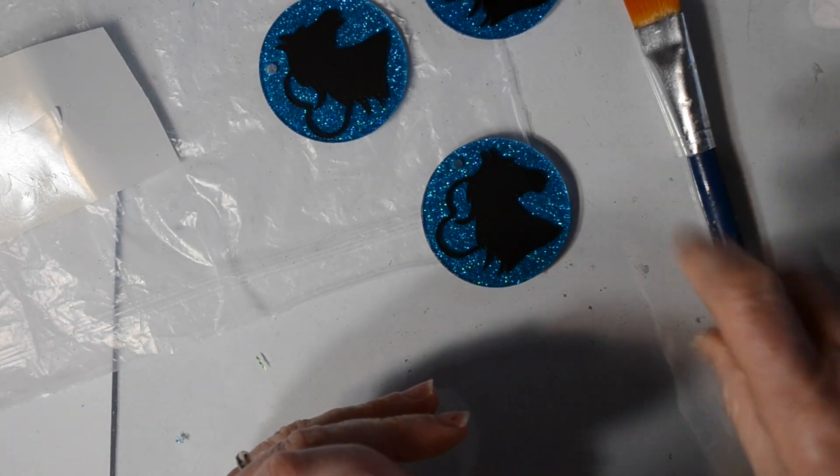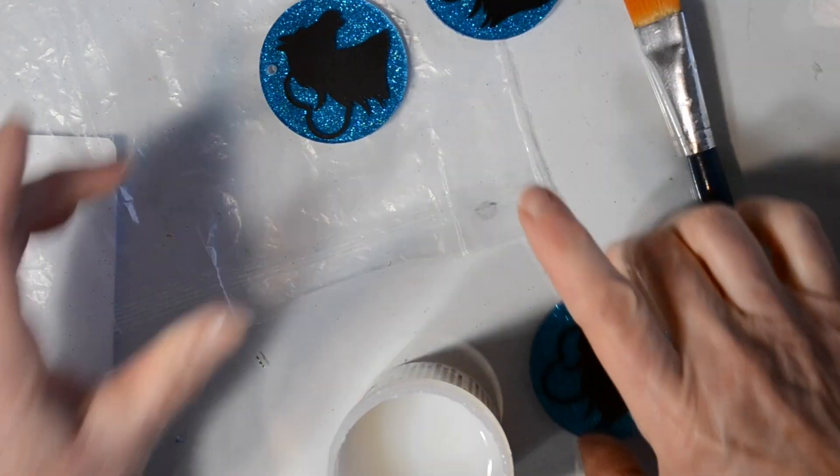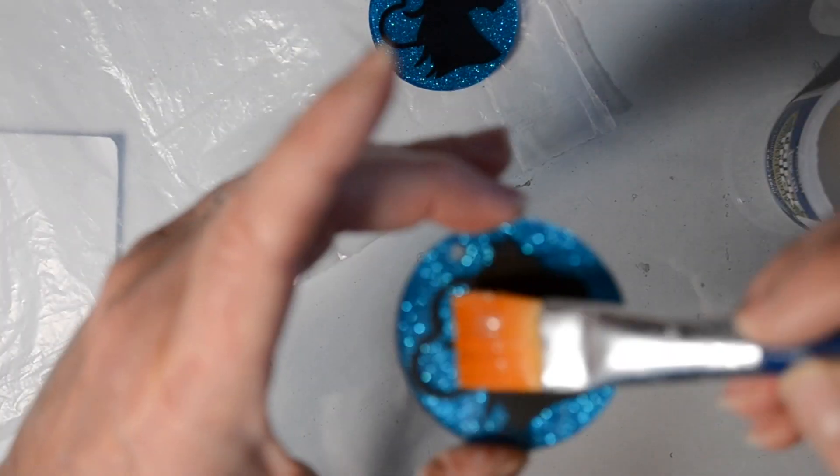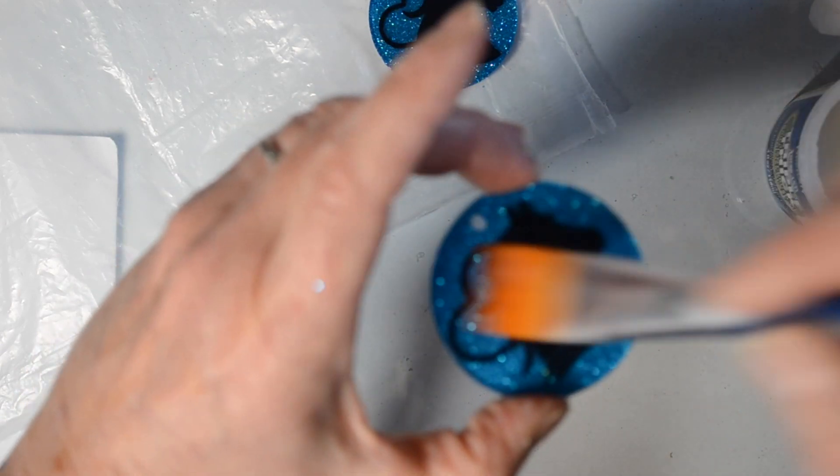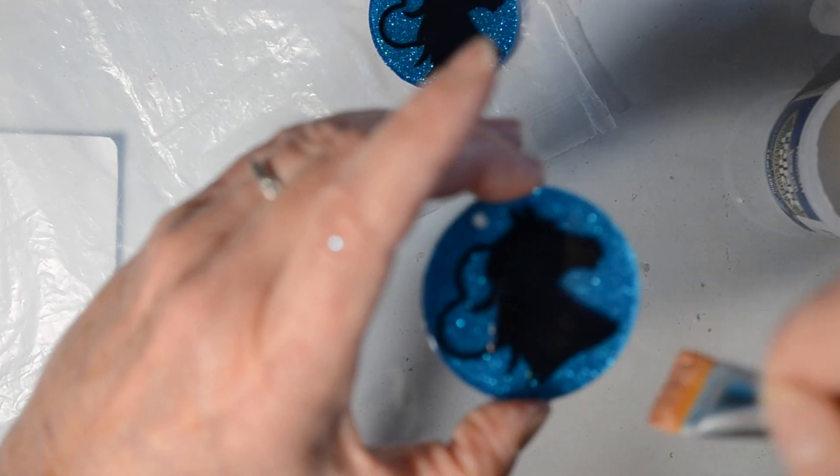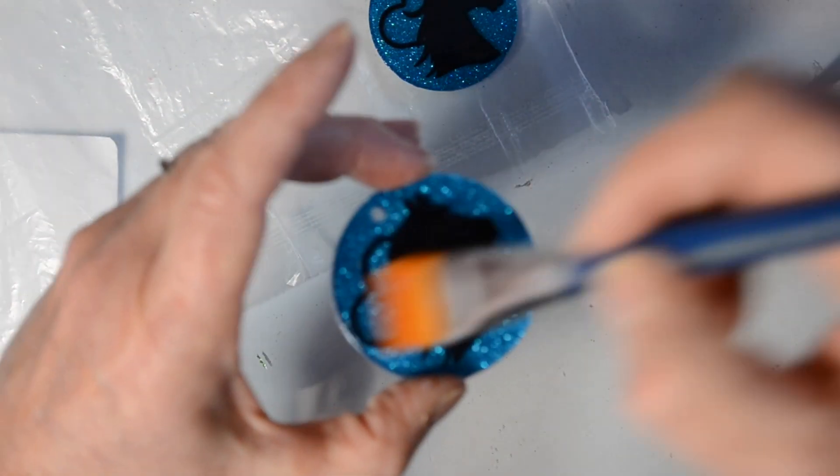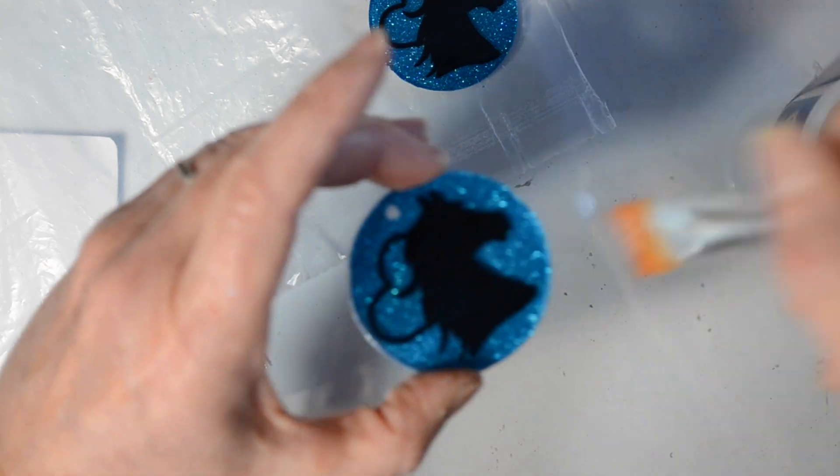Now I'm going to come in with that triple thick gloss and I'm going to do a layer over the front. Again, I'm just going to use a paintbrush and just paint right over. That's going to seal this piece of vinyl in and give it a really high gloss look. We're going to go ahead and let that front dry.